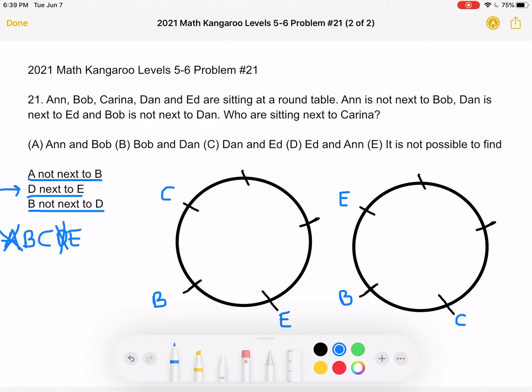And then using this statement, we know that D is sitting next to E. So we can put D here, D here, and then A takes that last spot.